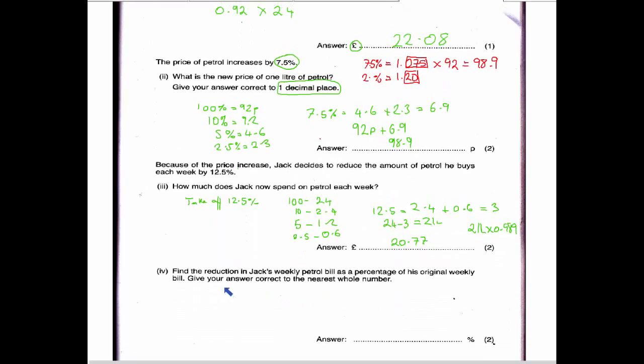Okay, final part then. Find the reduction in Jack's weekly petrol bill as a percentage of his original weekly bill. Give your answer correct to the nearest whole number. So we first want to find the reduction. So obviously his original bill was £22.08. We're going to take off £20.77 and that will give us a reduction of £1.31.